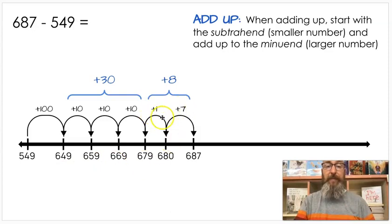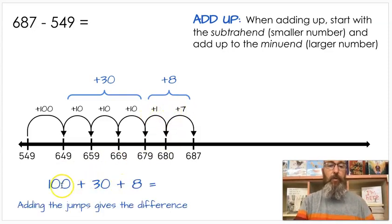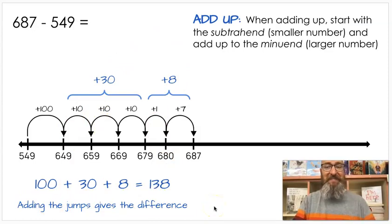And then I have a 1 and a 7, which makes an 8. Again, I'm going to add my jumps. 100 plus 30 plus 8. If I add the jumps, it gives me the difference. That's 138, which means 687 minus 549 equals 138.